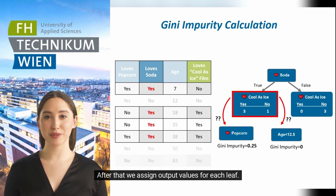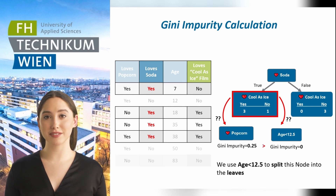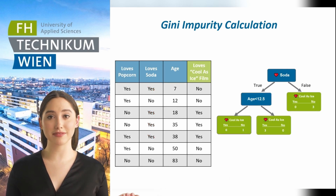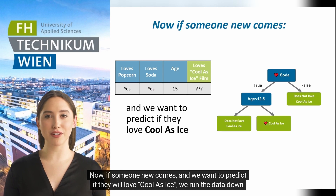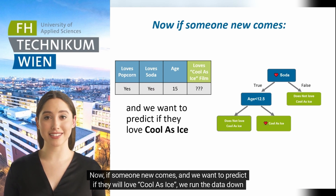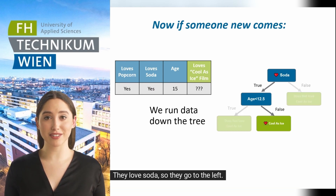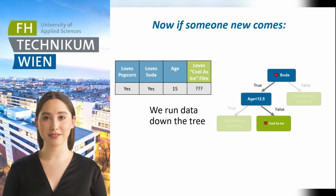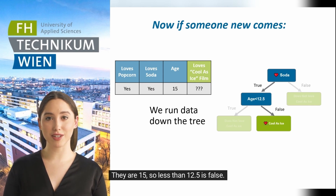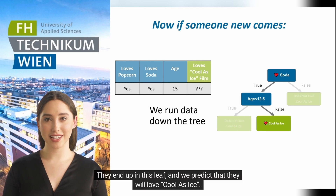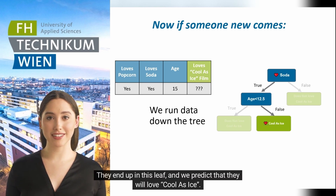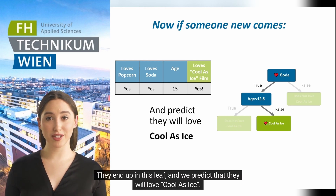After that we assign output values for each leaf. Now if someone new comes and we want to predict if they will love Cool as Ice, we run the data down our tree. They love soda, so they go to the left. They are 15, so age less than 12.5 is false. They end up in this leaf, and we predict that they will love Cool as Ice.